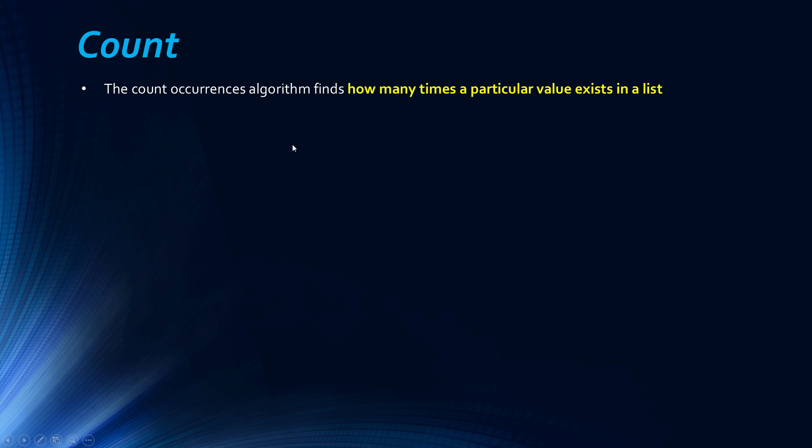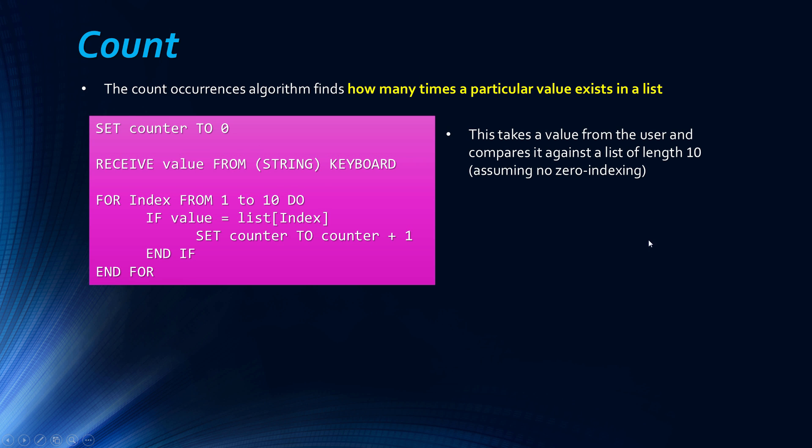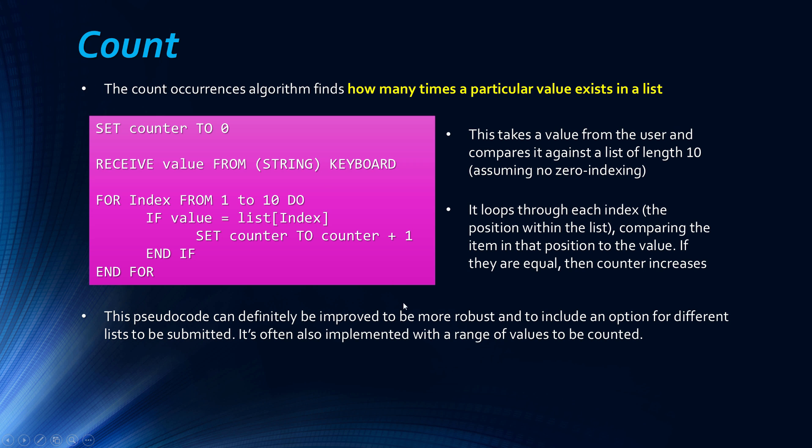Finally, the last algorithm we need to look at is the count occurrences algorithm. And this basically finds how many times a particular value exists in a list. So again, a relatively simple one to do, I've just done an example of, I mean, this one could definitely be expanded. And what this pseudocode does, it takes a value from the user, so it receives a value from the keyboard, and compares it against a list of length ten. So we've got one to ten here, and we're talking about indexing here, and we're assuming that we're not indexing starting from zero, we're assuming we're starting from one here. Unfortunately, with pseudocode, you can kind of do stuff like that, what you want. So what it does, it just loops through each index, the position of a list, and compares the item to the value at that point. And if they're equal, the counter increases. So you might want to pause it and just see if you understand what's happening there. But really, this could be improved, it's not very robust, and this is very limited to a list of ten items, so there's definitely a way to improve, but this is a very simple example.